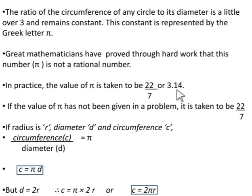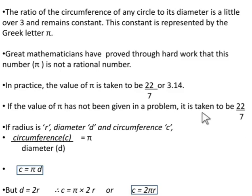In practice, the value of pi is taken to be 22 upon 7 or 3.14. As it is a little over 3, it is taken as 3.14, and in fraction form it is taken as 22 upon 7. If the value of pi has not been given in a problem, it is taken to be 22 upon 7. When solving examples, we will use 22 upon 7 as the value of pi, unless it is given as 3.14.